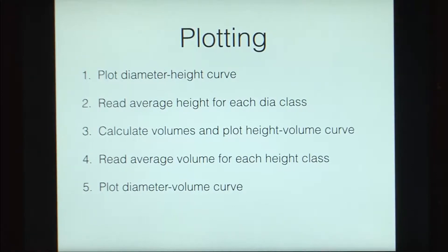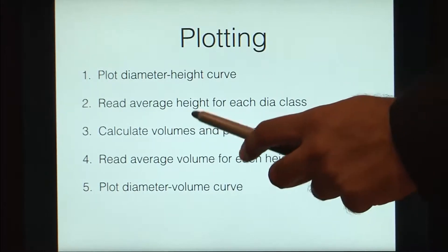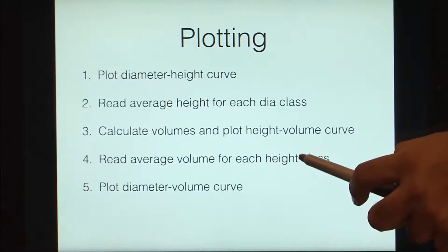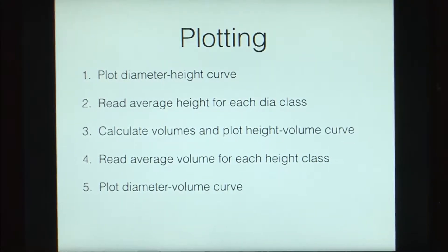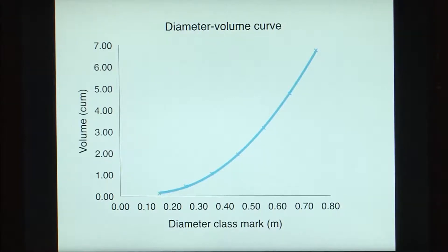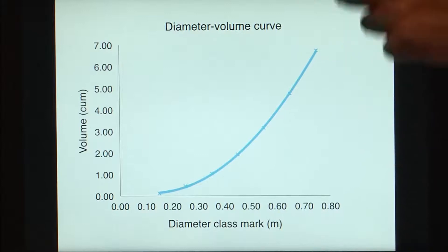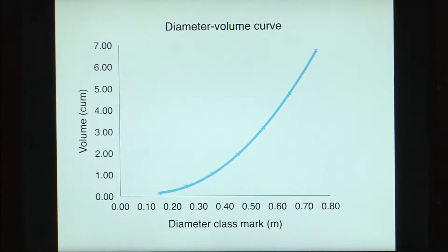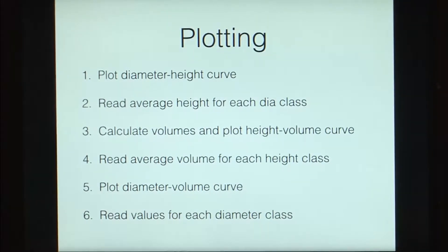We are trying to get the most typical values, which is why we plot the height versus volume curve and then read the average volume for each height class. We know the average height for each diameter class and the average volume for each height class. Next, we plot the diameter versus volume curve. The volume goes on increasing at a slow rate in the beginning and then increases exponentially. We read the values for each diameter class from this curve.